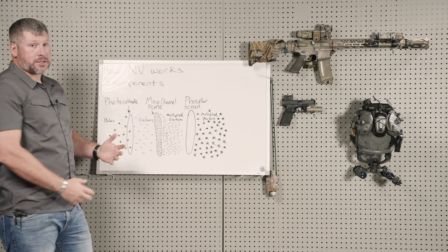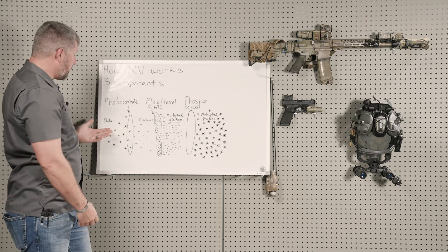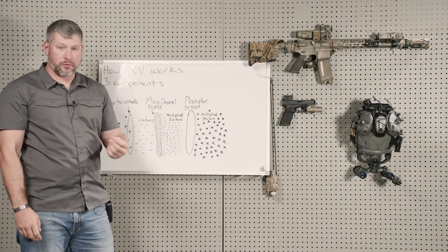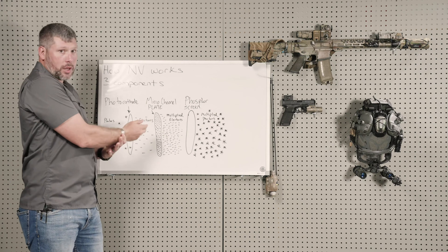As light photons enter the intensifier tube, they pass through the photocathode. The photocathode is nothing more than a conversion plate. It converts photons into electrons.